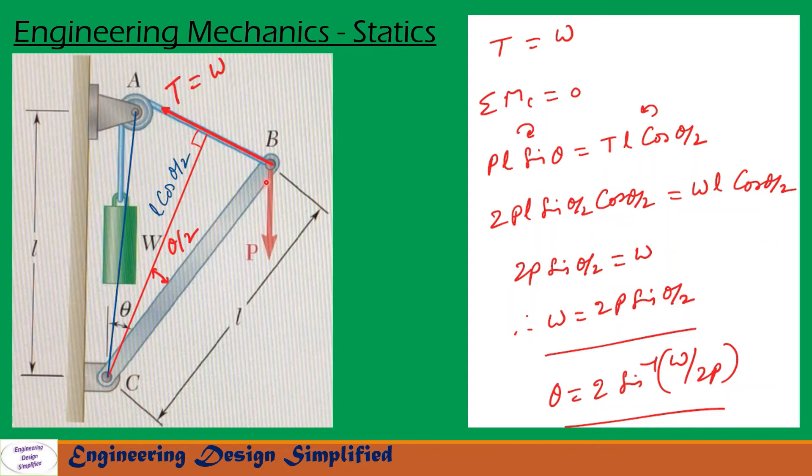Now let us take moment due to P about C. So P into this distance from C to B, the horizontal distance. Since this angle is theta, then the angle here will be 90 minus theta. This length is L. So distance from C to B, the horizontal distance, will become L cos 90 minus theta, that is L sin theta. So moment due to P about C will be P L sin theta. That will be clockwise direction.